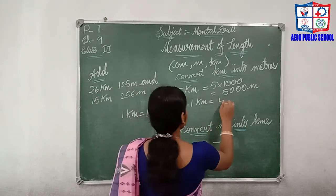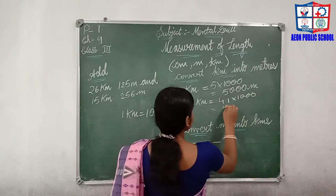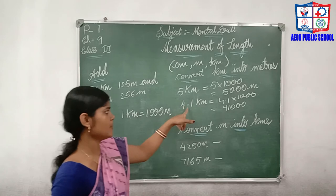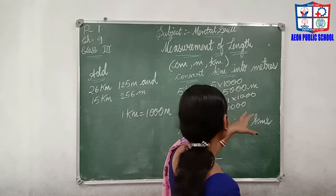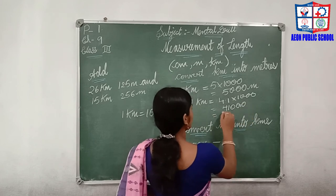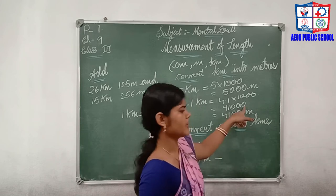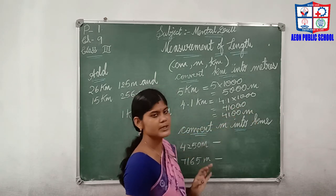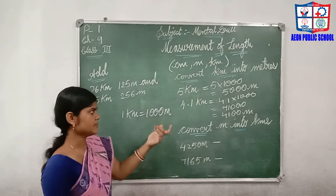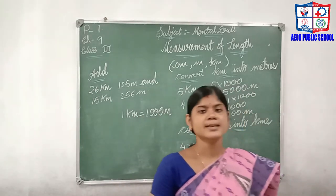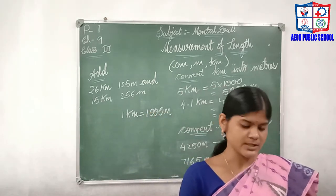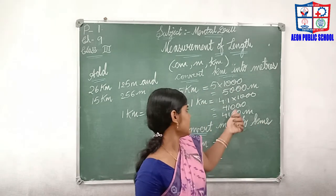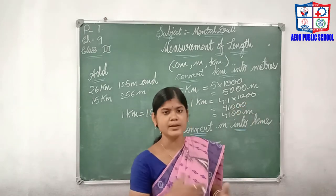For a decimal example: 4.1 × 1000 — we have 4, 1, and three zeros, but since the decimal point is after one digit, the answer is 4100 meters. The zero after the decimal point has no value, so we remove it. Similarly: 7.2 kilometers = 7200 meters; 4.5 kilometers = 4500 meters; 1.3 kilometers = 1300 meters.